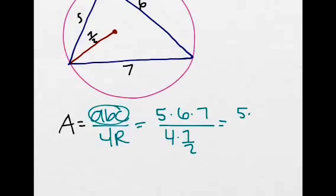we get 5 times 6 times 7 divided by 14 times 2. We can cancel out a 7, we can cancel out a 2,